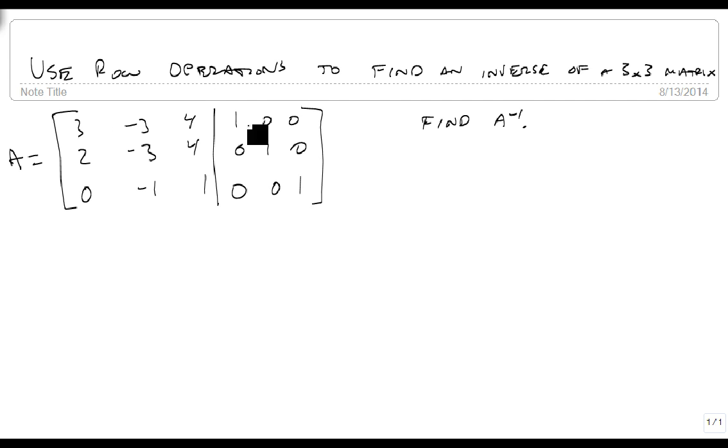So now that we've created our augmented matrix, we're going to start by taking row 1 minus row 2 and storing that in row 1. So it's going to be 1 minus 2, 3, 4, 0, minus 1, 0.